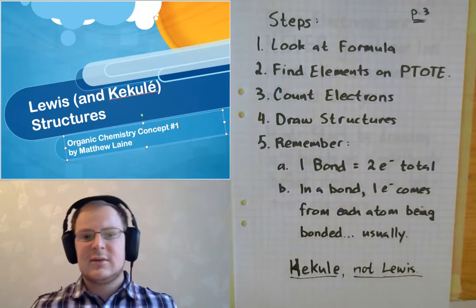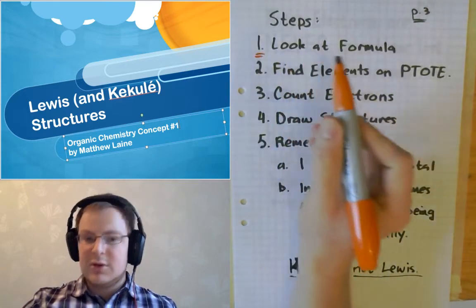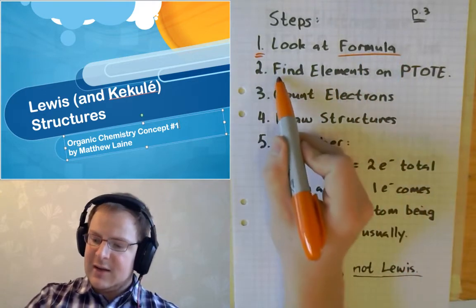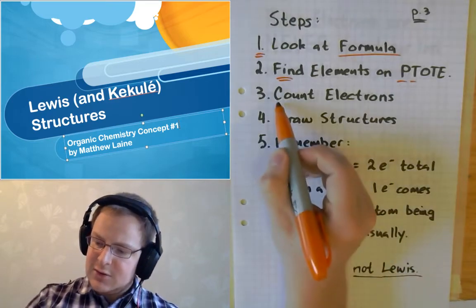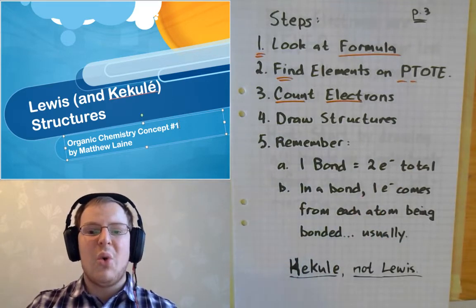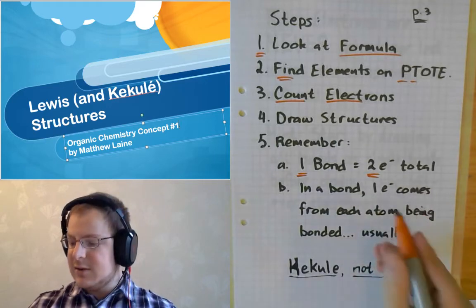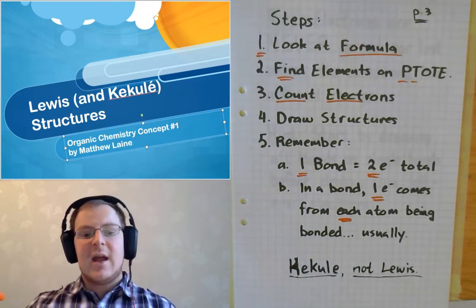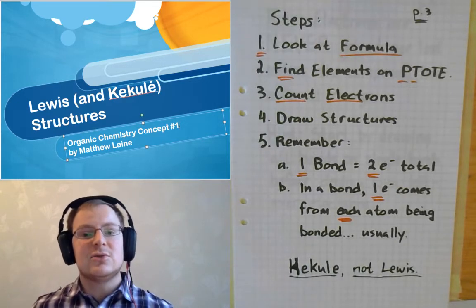How do we do this? We follow a five-step protocol. First, you look at the formula — you know what you're dealing with. Then you find the elements on the periodic table. Once you have found the elements, you count the electrons. Once you have counted the electrons, you draw structures, remembering that one bond is equal to two electrons, and in a bond, one electron comes from each atom being bonded — usually. Remember that we're going to be doing Kekulé structures, not traditional Lewis structures, because Kekulé structures are what chemists use almost all the time.